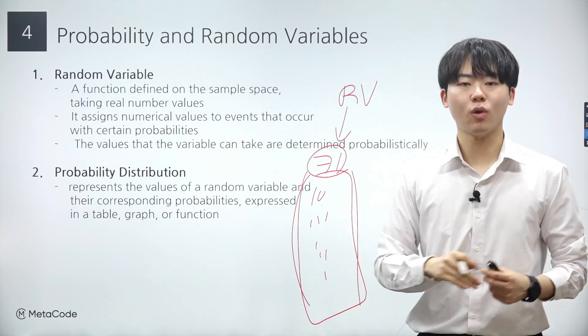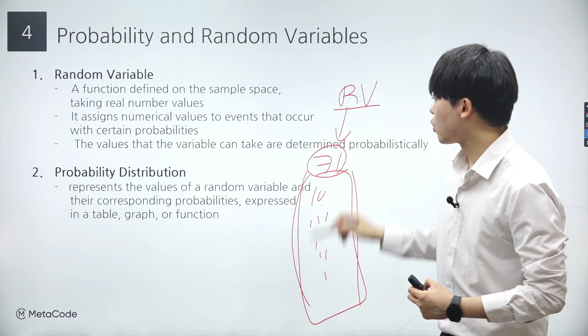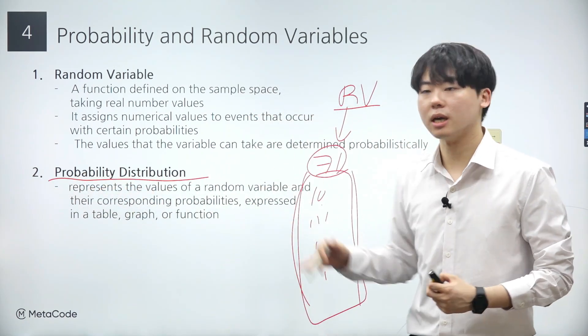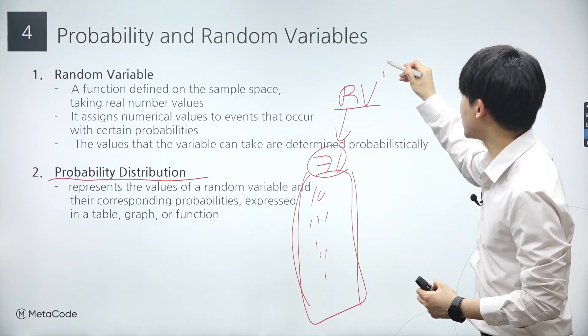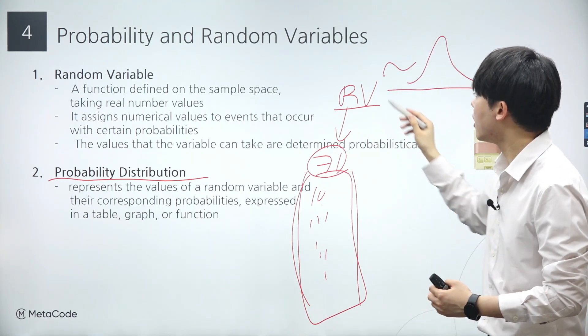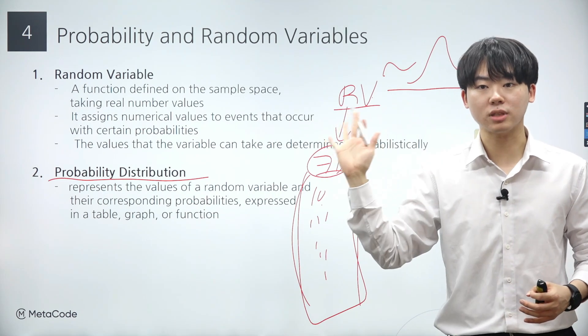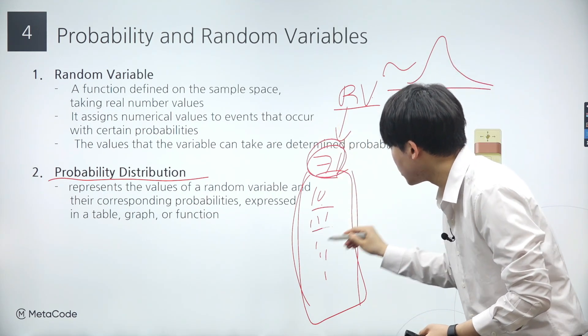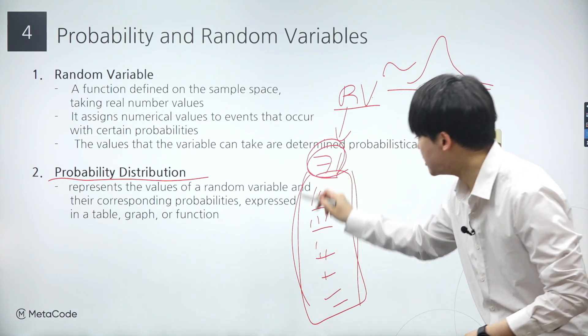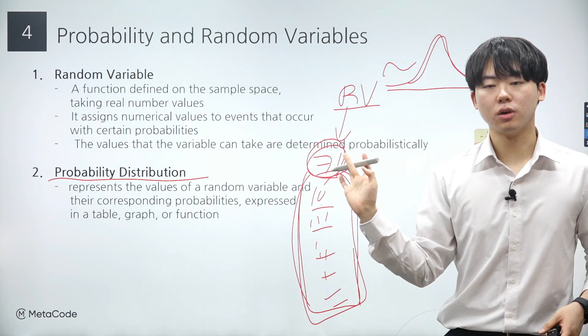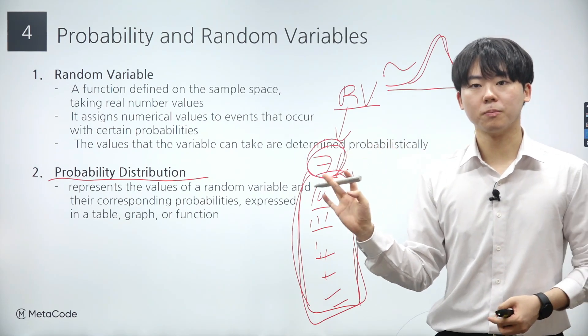Now let's say we choose to view height as a random variable. Just like with our previous example of coin flips, a random variable inherently comes with its own probability distribution. Once we've identified that our dataset conforms to a particular probability distribution, we can proceed to align our data points with this distribution. This involves fitting our observed data to the expected probabilities outlined by the distribution.